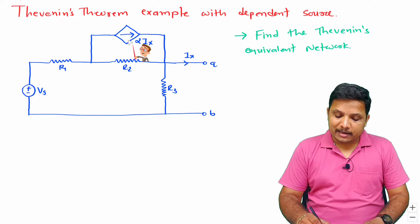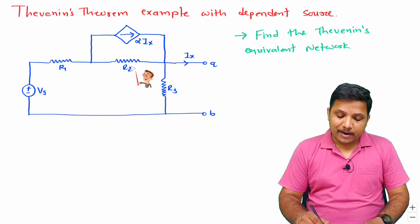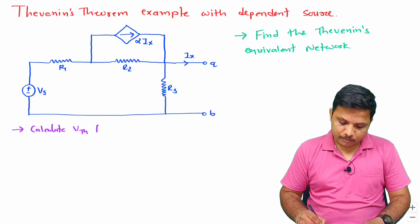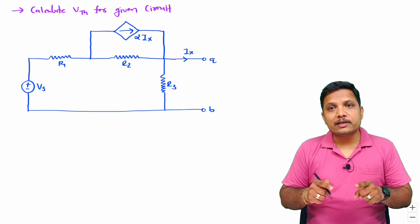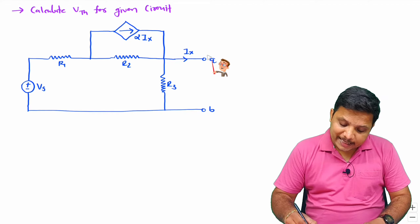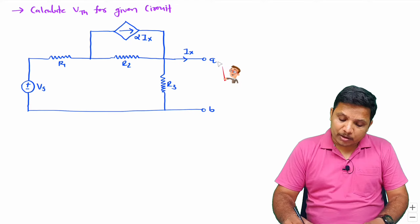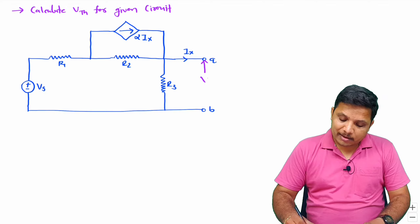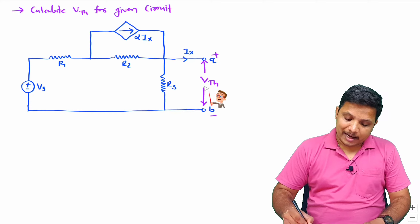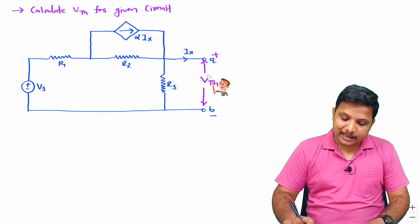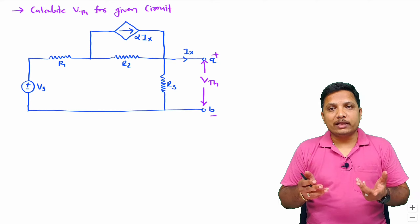Since this current source is a dependent current source, when you calculate the value of RTH, there are some modifications. Let us first calculate the value of VTH for this network. VTH is the equivalent Thevenin's voltage, and that process remains the same for dependent sources as well as for independent sources. When you want to calculate VTH, it will be the voltage measured at the output — at the AB terminal, we will be measuring voltage VTH. Let us say this is the plus and this is the minus terminal. We should remove the load if it is connected. For the given circuit, we don't have any load, so we don't need to remove anything.